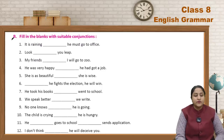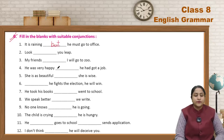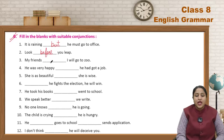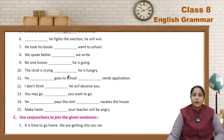Now, Exercise B — Fill in the blanks with suitable conjunctions. 'It is raining but he must go to office.' 'Look before you leave.' 'My friends and I will go to the zoo.' 'He was very happy because he had got a job.' 'She is as beautiful as she is wise.' The remaining parts you will try on your own.